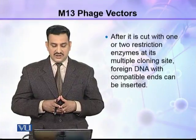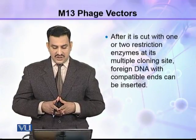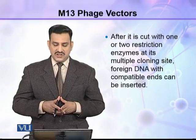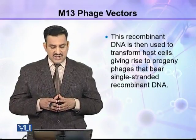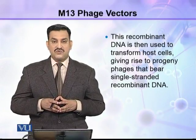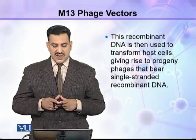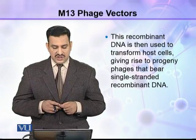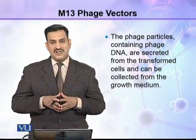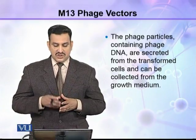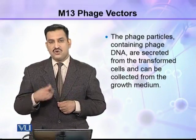After it is cut with one or two restriction enzymes at its multiple cloning site, foreign DNA with compatible ends can be inserted. This recombinant DNA is then used to transform host cells, giving rise to progeny phages that bear single stranded recombinant DNA. The phage particles containing phage DNA are secreted from the transformed cells and can be collected from the growth medium.